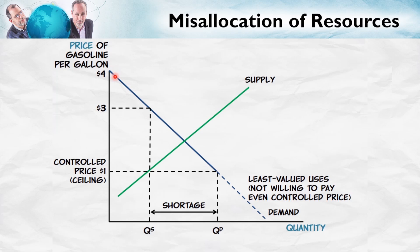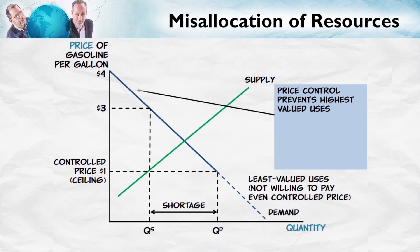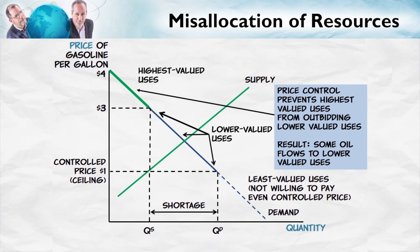In a free market, these uses or users would outbid the other uses. Goods would flow from the low valued uses to the high valued uses, and these would end up being the uses which would be supplied in a free market. Here's the key point: the price control prevents the highest valued uses from outbidding the lower valued uses. As a result, some oil will flow to lower valued uses — in other words, as a result of the price control, some rubber duckies will end up being produced even when we don't have enough oil to fly jet aircraft.